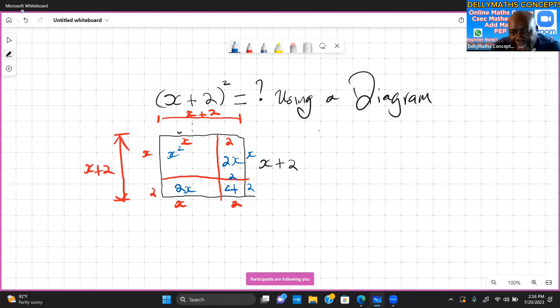So what is the final answer? We're looking at x² + 2x + 2x + 4. And if I finalize this, we'll have x² + 4x + 4. And there you have it, expanding (x + 2)² using a diagram. Thank you.